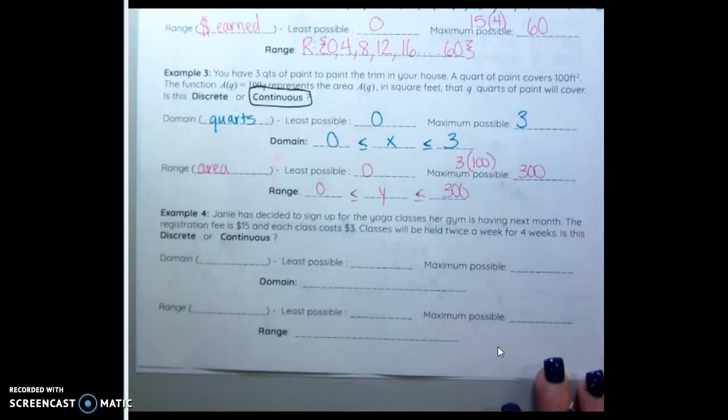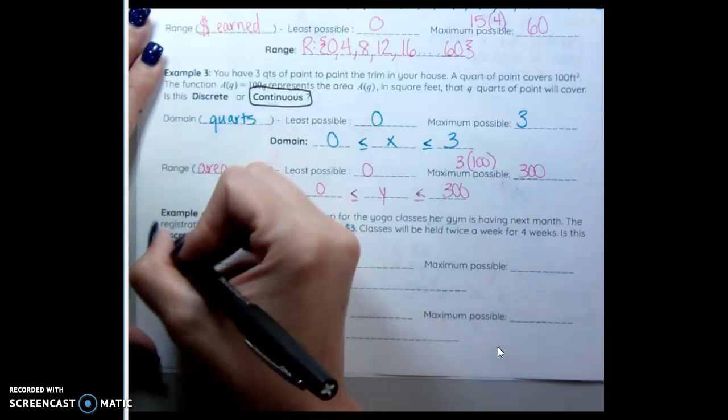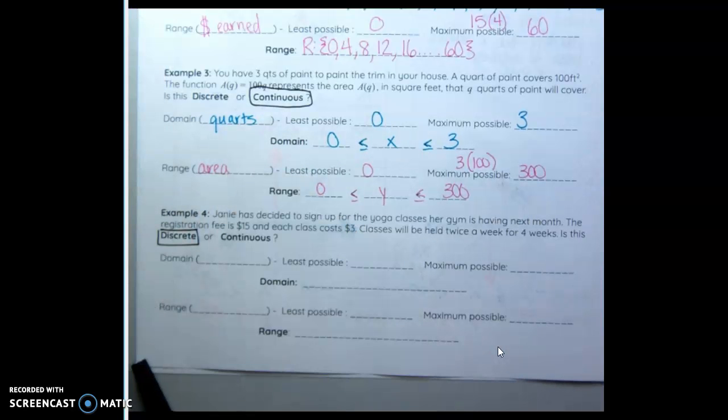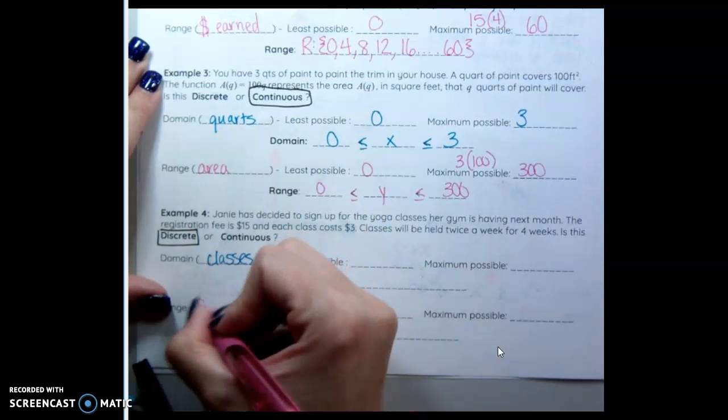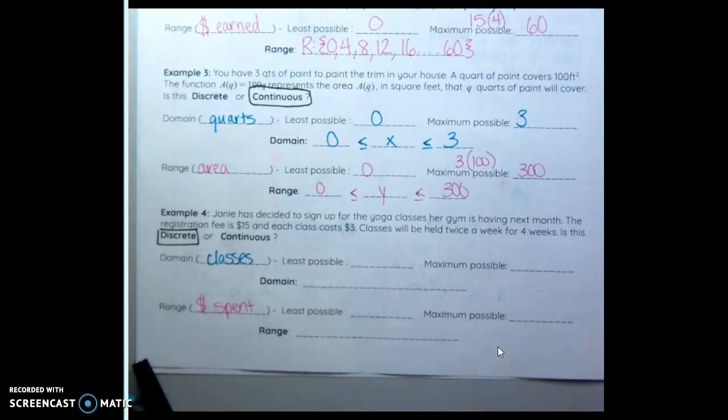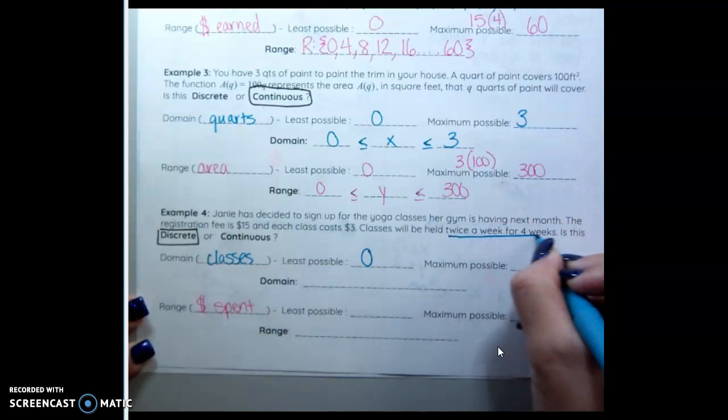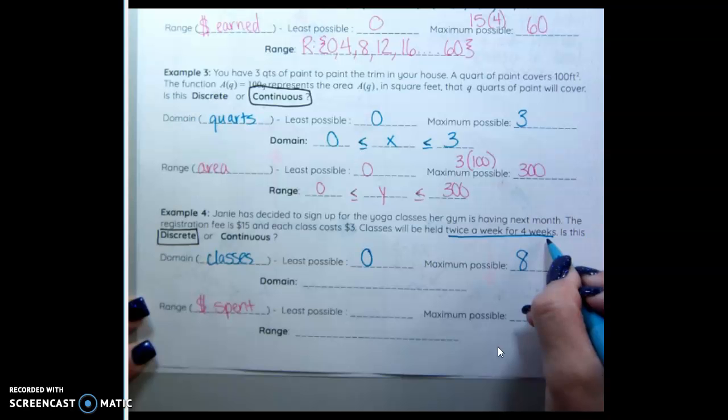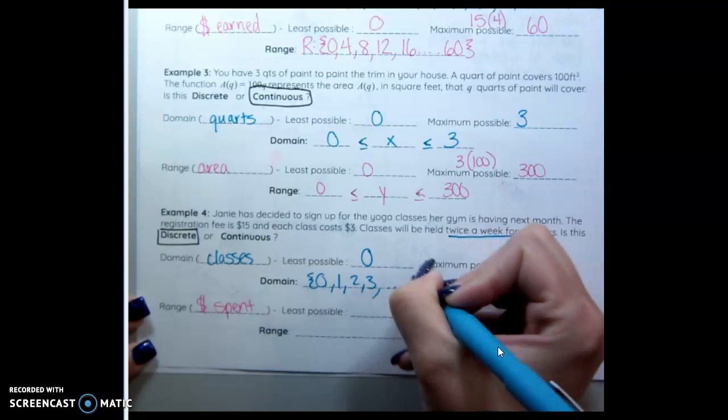Example 4. Jenny has decided to sign up for yoga classes her gym is having. The registration fee is $15. Each class costs $3. The class will be held twice a week for four weeks. Is this discrete or continuous? Will they let you go to half a class for $1.50? No. This is discrete. Our variables are classes and money spent. So the classes will occur whether you go to them or not. You don't spend any money if you don't go to the gym. The least possible classes you can go to is zero. The most you can go to is eight. Because they're twice a week for four weeks. So our domain: zero, one, two, three, all the way to eight.